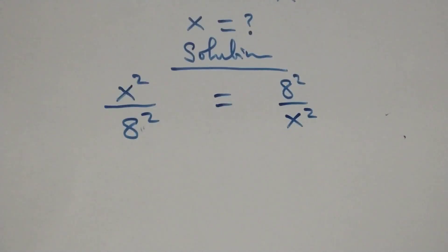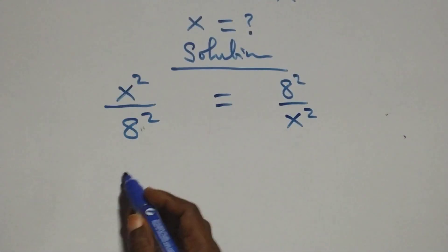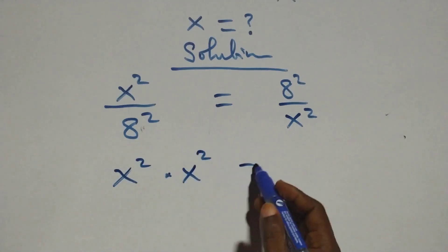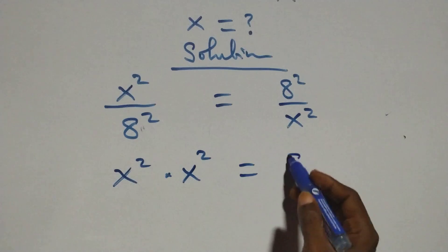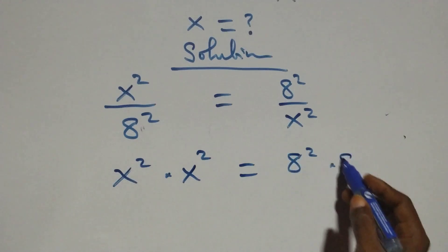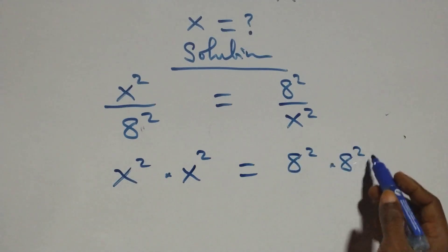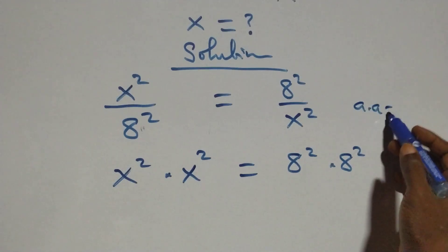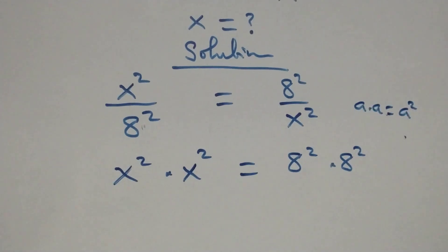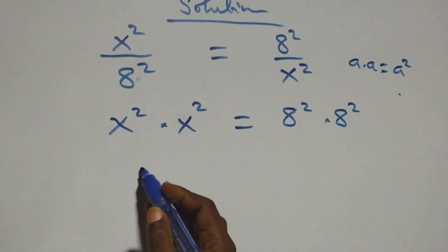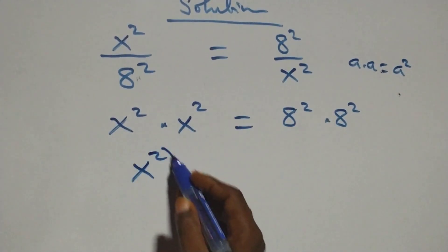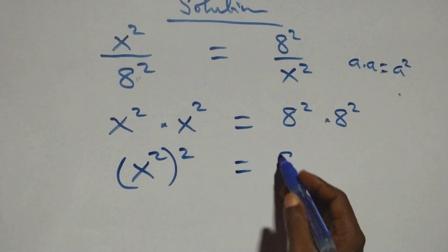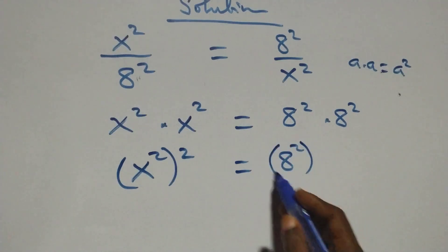We cross multiply: x² times x² equals 8² times 8². Since a times a can be written as a², this gives us (x²)² equals (8²)².